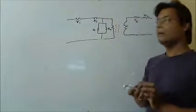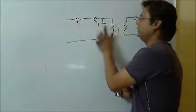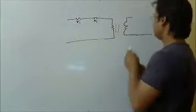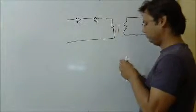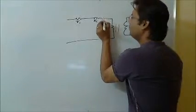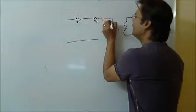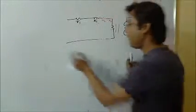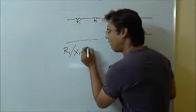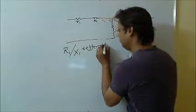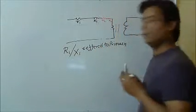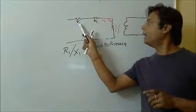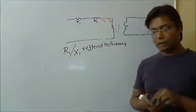If we want to transfer R2 and X2 to the primary side, we refer them to primary. When written as capital R1 and X1, it means referred to the primary side. When written as small R2 and X2, it means resistance and inductance referred to the secondary side.